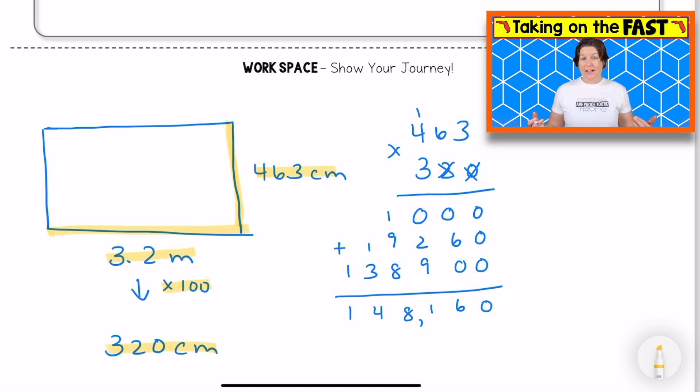Then I know to find the area I had to multiply the length times the width. So that is 463 times 320, or the other way around is fine too. You could have done 320 times 463. That's the commutative property of multiplication. And when I multiplied using the standard algorithm, I got the answer of 148,160.